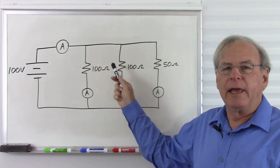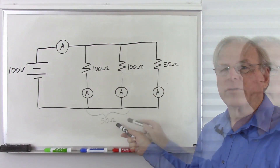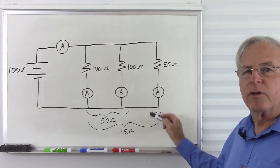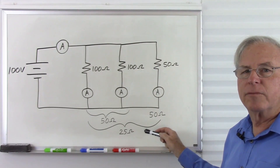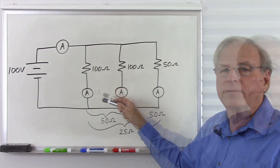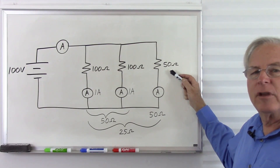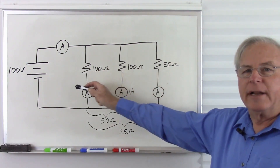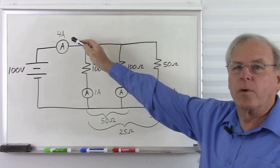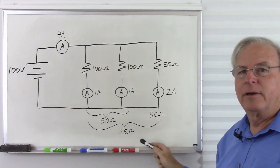Here again we have three resistors in parallel, and I made these numbers easy so we can do the calculations in our head. We have 100 ohms in parallel with 100 ohms — that gives us 50 ohms. Now this 50 ohms is in parallel with this 50 ohms, so together they are 25 ohms. Let's check with Kirchhoff's current law: 100 ohms with 10 volts gives 1 amp, same again gives another 1 amp, and 50 ohms into 10 volts gives 2 amps. Total current is 4 amps. Dividing into 100 volts gives us 25 ohms — confirmed.